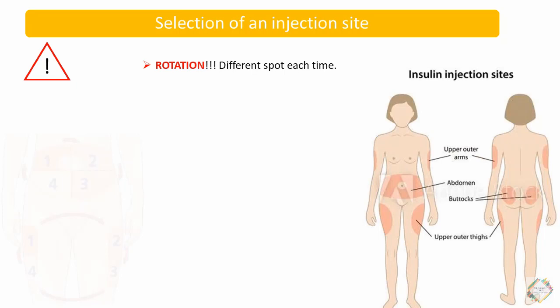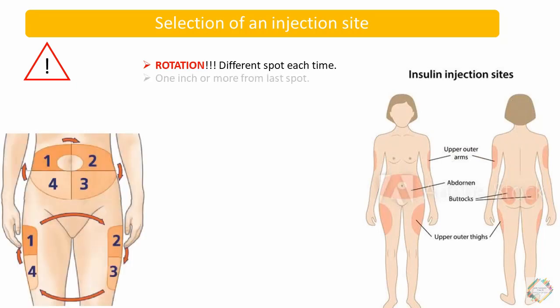Keep in mind that each time you rotate, you have to change the site by one inch or more from the last spot. Also, when administering insulin at the abdomen, it should be two inches or more away from the belly button.